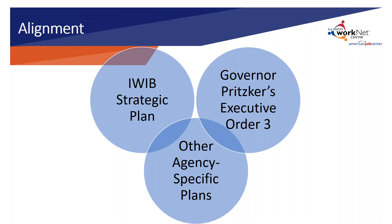Careful attention has been paid to aligning the Unified State Plan with the Illinois Strategic Plan, Executive Order III from the Governor, and other agency-specific plans such as Perkins V. The Commerce Agency Plan has also been released for those involved in that plan's process, and someone from the Department of Commerce may want to add more information on that later in the presentation.